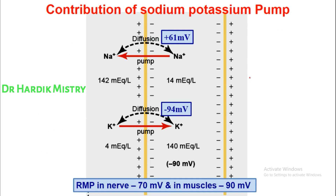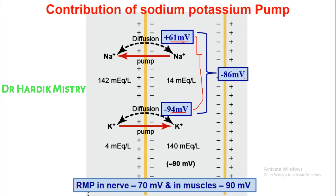We focus first on the Nernst potentials for sodium and potassium, since there is a major concentration difference for both ions between ICF and ECF. The Nernst potential for sodium is plus 61 mV and for potassium is minus 94 mV. When we enter all these values — sodium and potassium concentrations inside and outside, along with their respective permeabilities — into the Goldman equation, we get a summated potential of minus 86 mV.